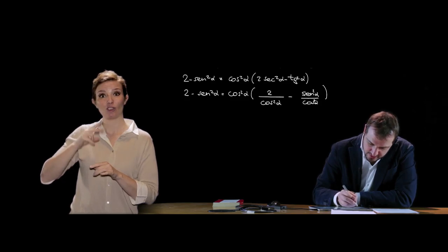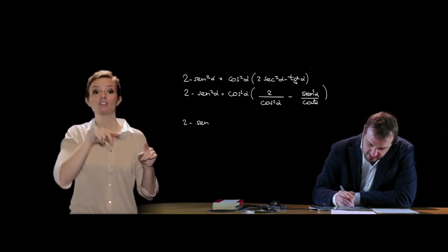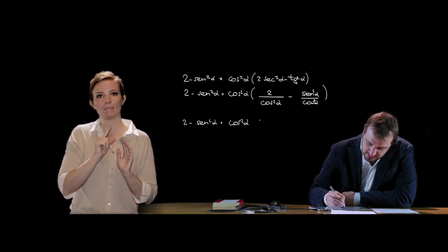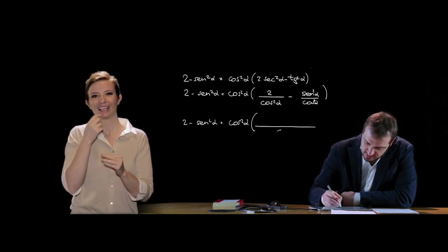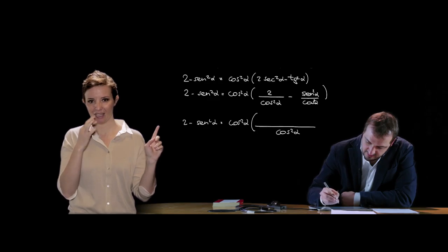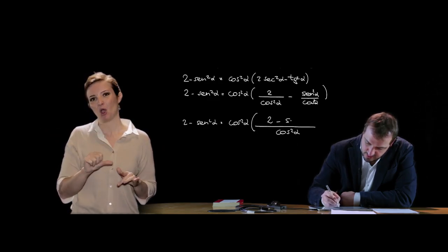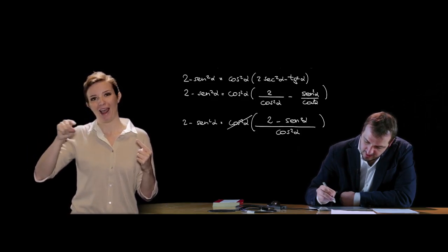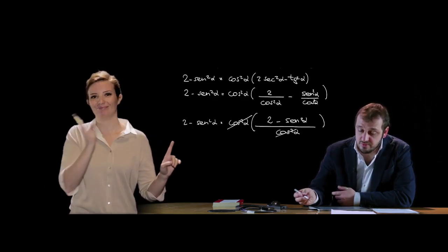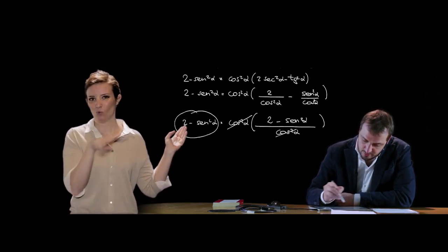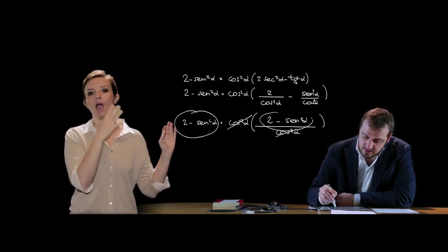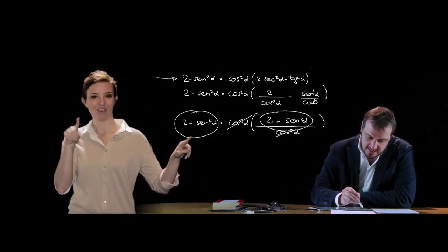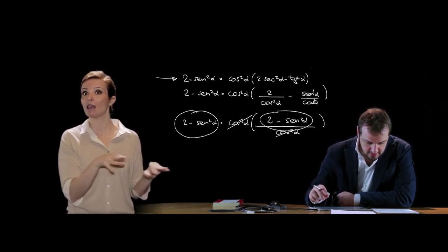A questo punto possiamo al secondo membro continuare a lavorare, facendo il minimo comune multiplo dei termini all'interno della parentesi, che è cos² α, ottenendo 2 − sen² α al numeratore. cos² α e cos² α si semplificano, e quindi il primo membro è esattamente identico al secondo: questa uguaglianza è una identità.